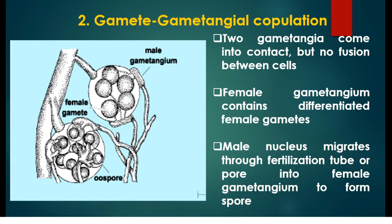The male gametangium does not differentiate into special gametic cells; instead it contains a number of nuclei. The female gametangium comes in contact with the male gametangium, and the male nucleus migrates through a fertilization tube or pore into the female gametangium to form the spore.